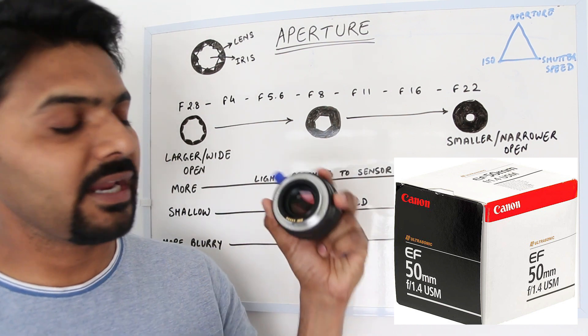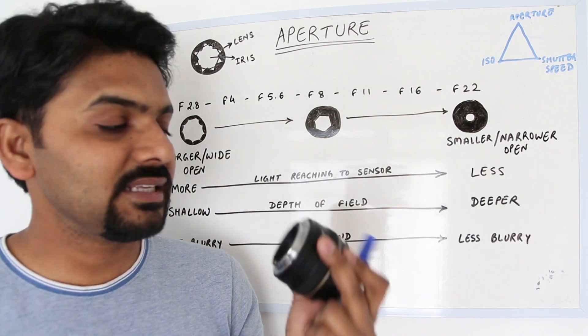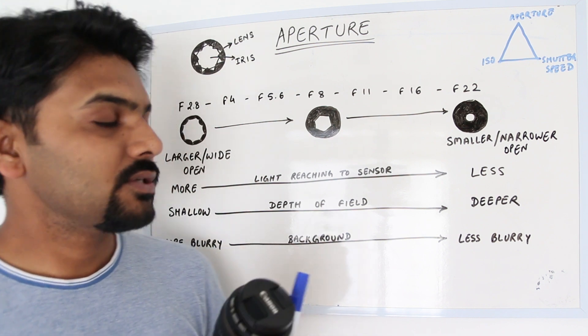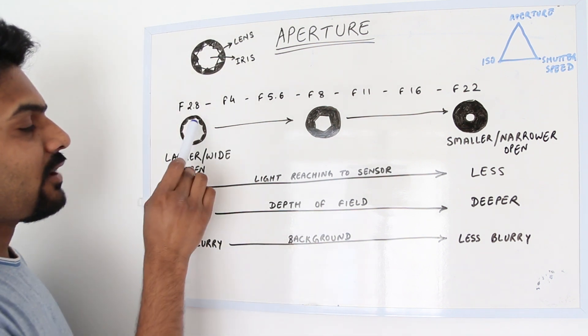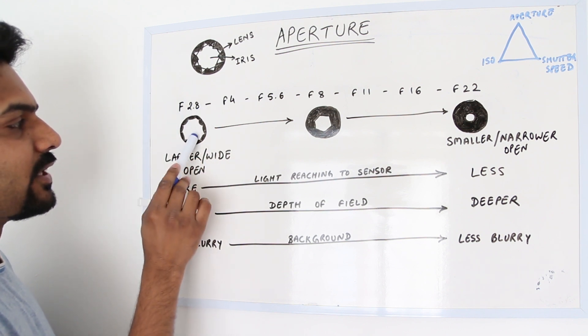A bigger iris opening allows more light to enter through the lens and reach the sensor of the camera. If you have a bigger aperture opening like f/2.8 or f/1.4, the lens iris is open widely.